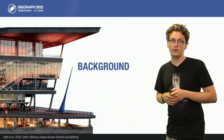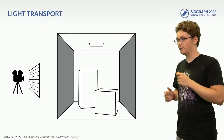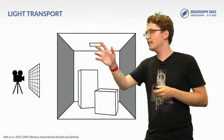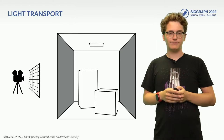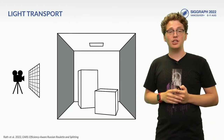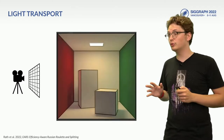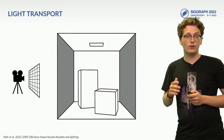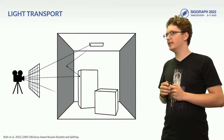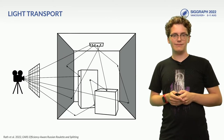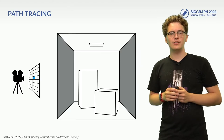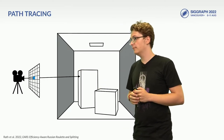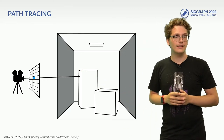Without further ado, let's jump straight into the background of our talk, starting with light transport. Here we see a virtual scene consisting of a camera, light source as well as surfaces that can reflect light. The goal is to simulate the image captured by the virtual camera as faithful to reality as possible. This problem is known as light transport simulation and involves finding and evaluating all possible connections between camera and light sources.